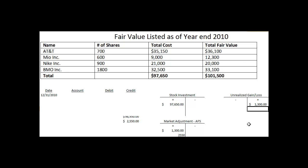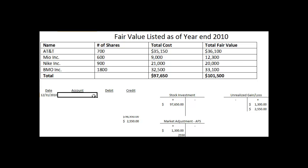The $2,550 also gets added to the gain, so now we have a net unrealized gain combining 2009 and 2010. Our journal entry looks like this: we debit the market adjustment — available for sale — for $2,550.